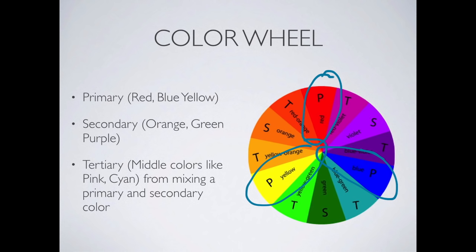In between each of the primary colors is a secondary color. This is like mixing paints together — if we took red paint and blue paint and mixed them together, we would get purple or violet. Orange and green are also secondary colors. So that's the color in between each of the primary colors — a straight mixing of those colors.